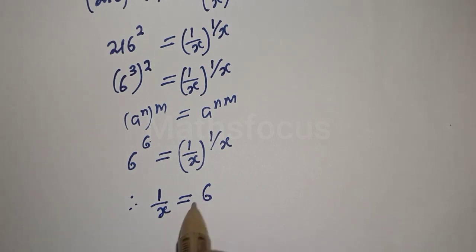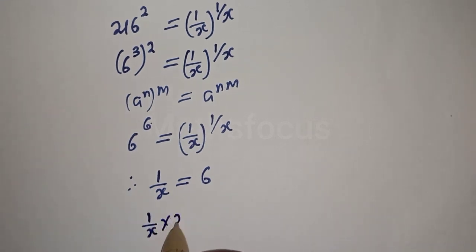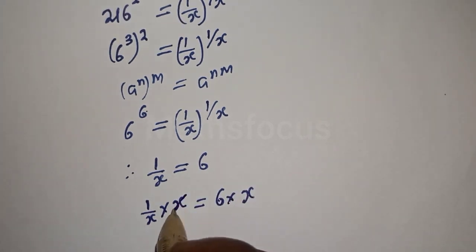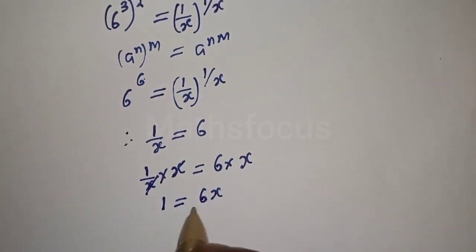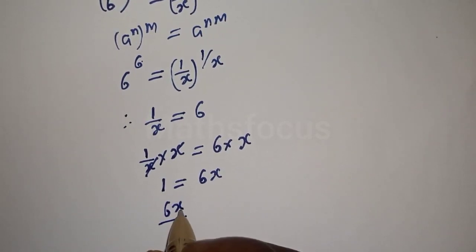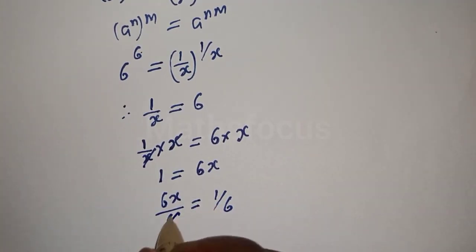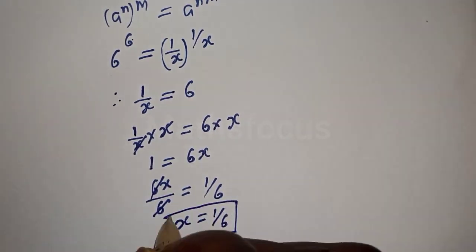Now we are looking for the value of x. Let's multiply both sides of the equation by x. 1 over x multiplied by x is equal to 6 multiplied by x — this cancels to give 1 is equal to 6x. Now let's divide both sides by 6: 6x divided by 6 is equal to 1 divided by 6. This cancels, so x is equal to 1 over 6, and this is the final answer.